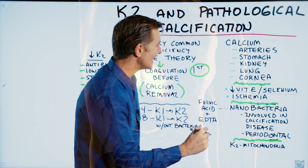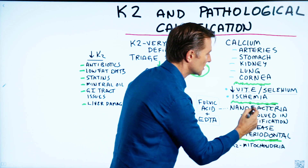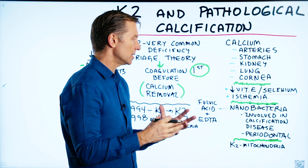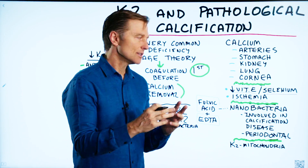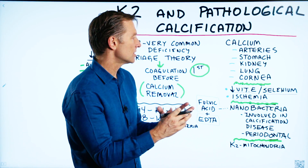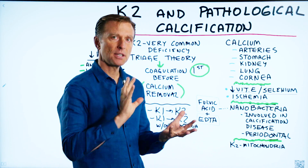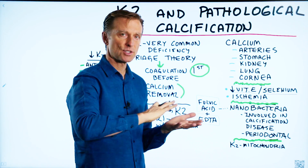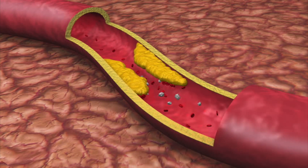then you have the added ischemia, which is a lack of blood flow. That combination of low nutrients, damage to the tissues, and low blood flow means calcium will tend to invade and start to actually heal the area at the expense of clogging an artery.